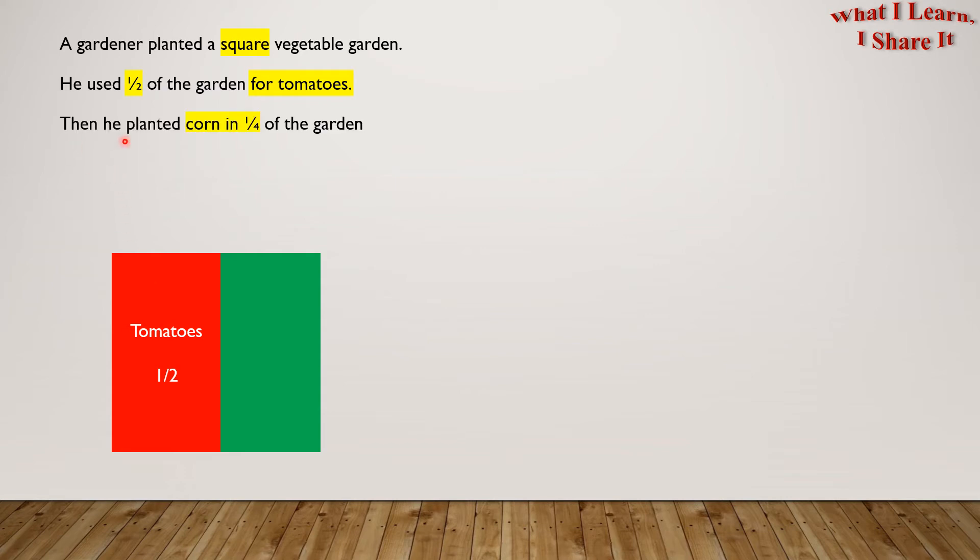Then he planted corn in one-fourth of the garden. As we see here, this is one-fourth of the garden planted with corn. And carrots on one-fourth of the garden. So here is the rest, one-fourth of the garden planted with carrots.